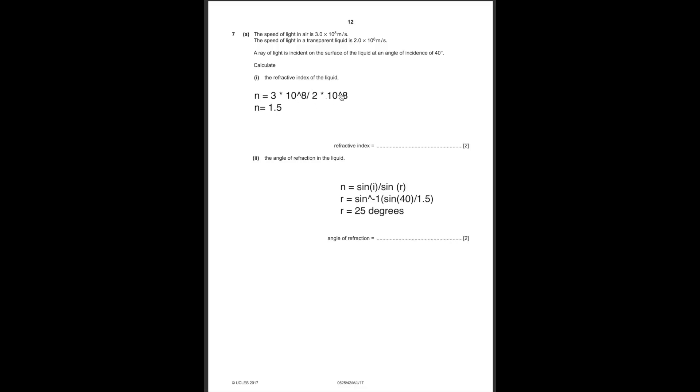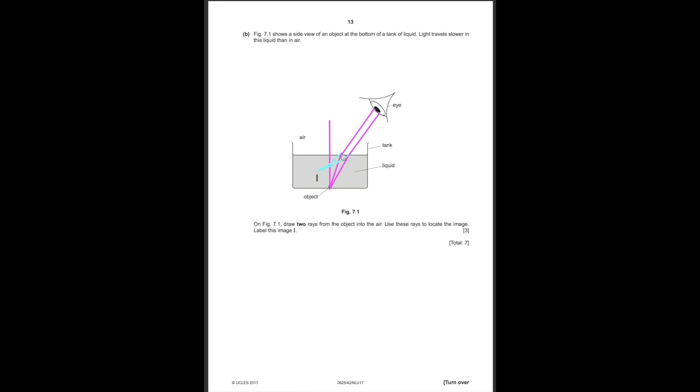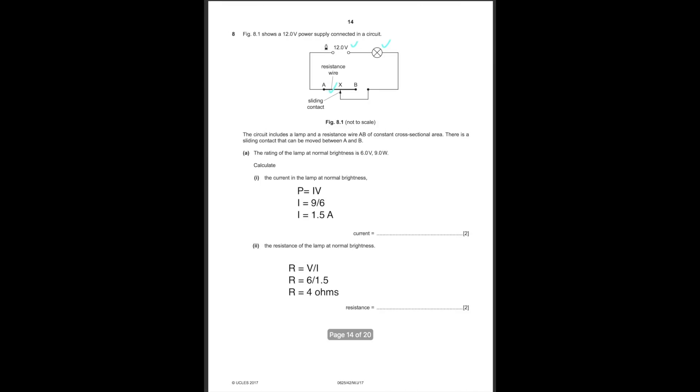The refractive index is sine i divided by sine r, or the speed of light in air divided by the speed of light in whatever medium you want. Use the formula to find this, and use the sine i by sine r version for this part. Light refracts into your eye because it goes from different mediums, but the actual image is formed with a reflected ray. If you draw the rays backwards, you get the image. This line is just the normal — it passes straight through and doesn't get refracted.